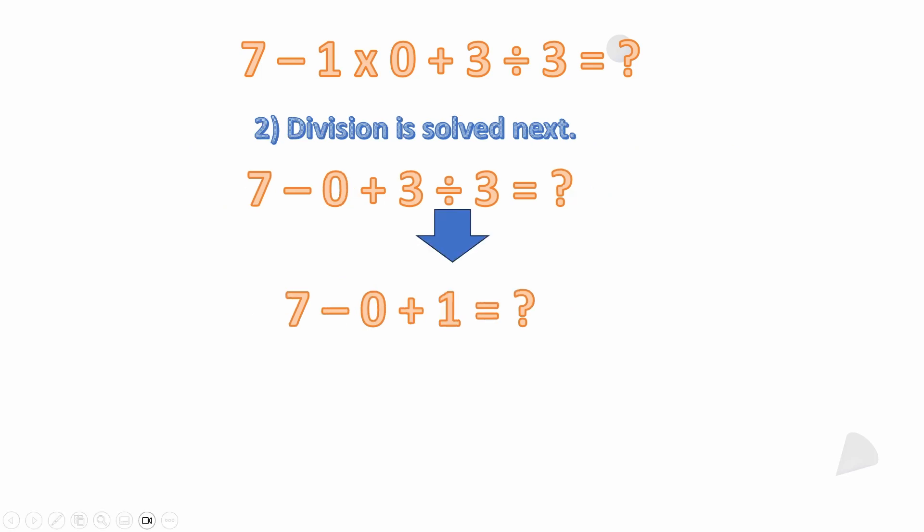The next step, we have division, so division would be next as we're going left to right. We're not doing the addition and subtraction yet; those have a lower priority. So 3 ÷ 3 = 1.